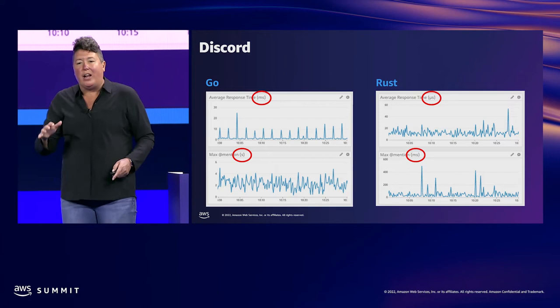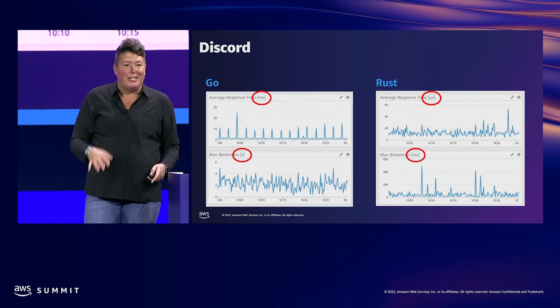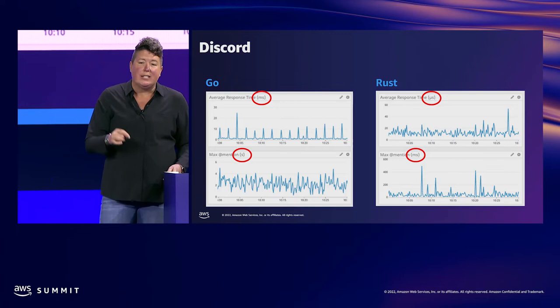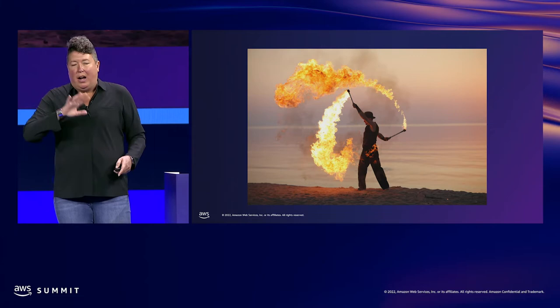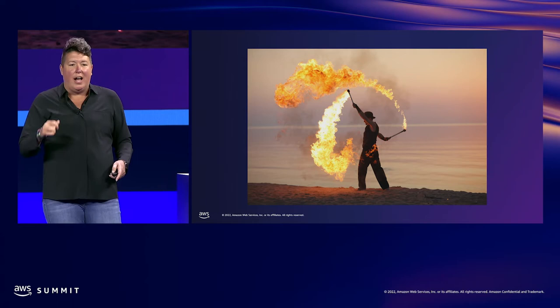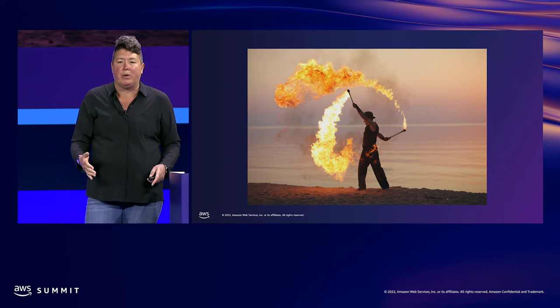Discord didn't come to Rust because they were thinking sustainability — they came for the ROI of optimized safety, speed, and concurrency. But the end result is a more sustainable solution. Rust is not the first efficient language; C has been around for a very long time. The difference is that Rust is the first mainstream programming language that gives you that efficiency without sacrificing safety. Seventy percent of high-severity security vulnerabilities in C and C++ code are due to memory safety issues — something that is prevented in Rust.